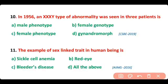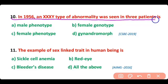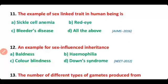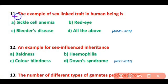Question number 10. In 1956, a triple XXY type of abnormality was seen in three patients. What kind of phenotype does it have? So correct answer is option A. The triple XXY type of abnormality has male phenotype but it has more female characters due to the abundance of X chromosomes.